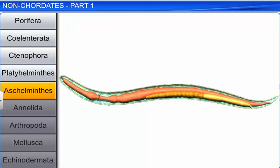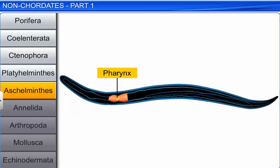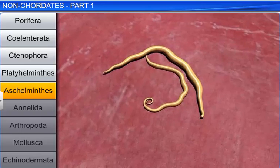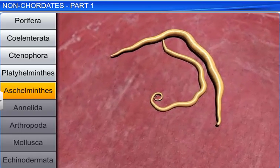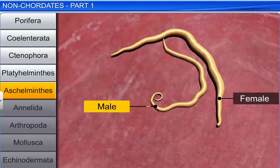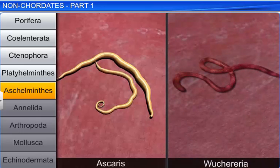In Aschelminthes, the alimentary canal is complete with a well developed muscular pharynx. Body wastes are removed through the excretory pore. Roundworms are dioecious, and the females are usually longer than the males. Fertilization is internal, with direct or indirect development. Ascaris and Wuchereria are common members of this phylum.